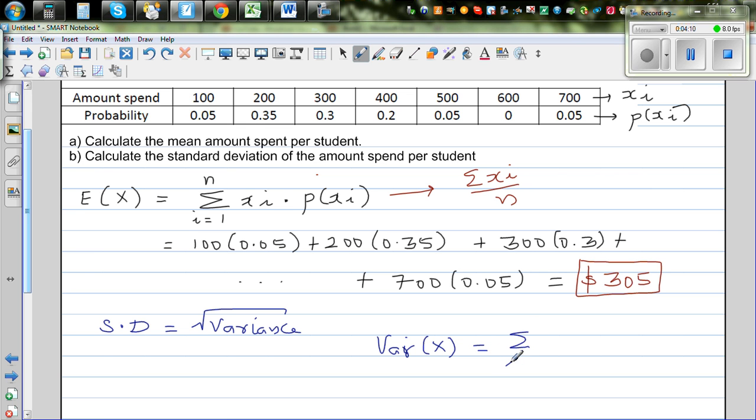Sigma i running from 1 to n of xi minus mu, which is this, this is your mu, expected value is your mu, which is your population mean, squared times probability of xi.